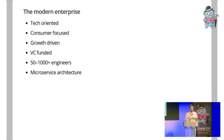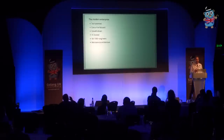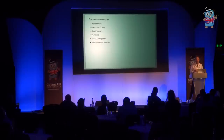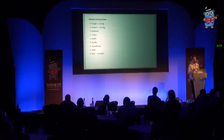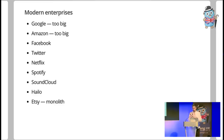The modern enterprise, as I define it, is a company that is sizable — probably at least 50 engineers, maybe up to a thousand or more. This is important because engineering process becomes critical at that scale; the way you communicate with peers and structure your code matters in ways that smaller teams can get by without. And just as a historical accident, these organizations tend to be microservice-oriented. Examples include Google and Amazon — though those are too big — and companies like Twitter, Netflix, Spotify, SoundCloud.